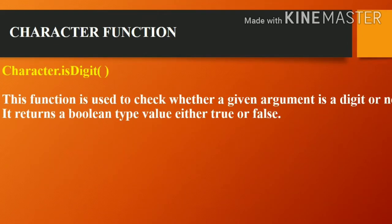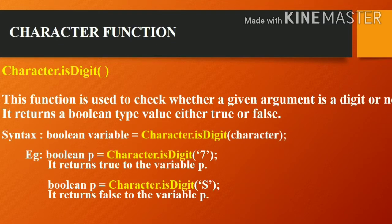The next function is Character.isDigit(). This function is used to check whether a given argument is a digit or not. If it is a digit, it returns true; otherwise it returns false. For example, if '7' is written in the argument, it is a digit, so it returns true to variable p. If 's' is written in the argument, it returns false to variable p.